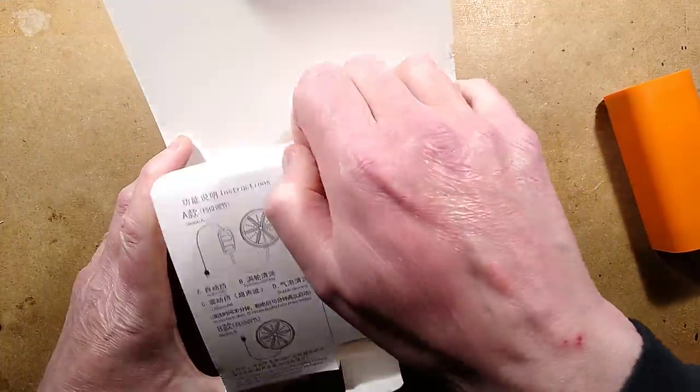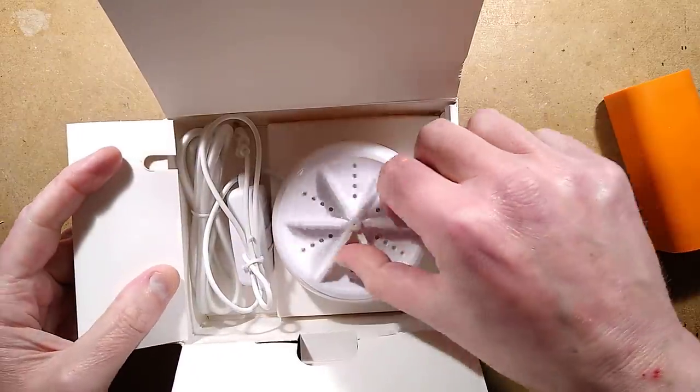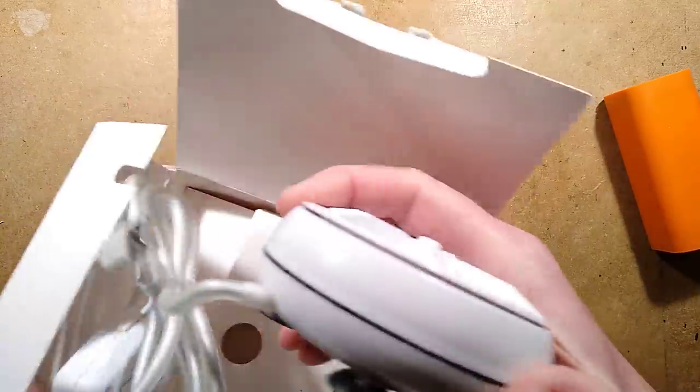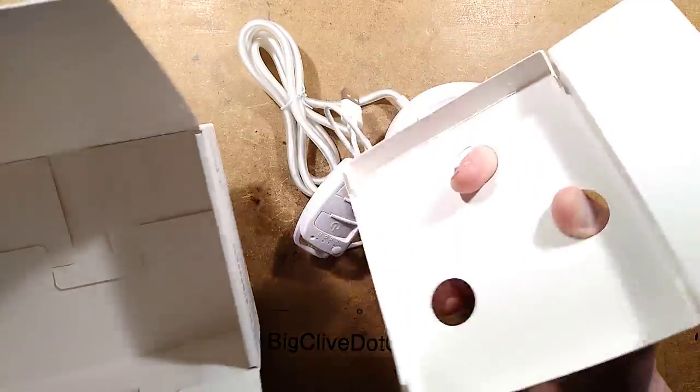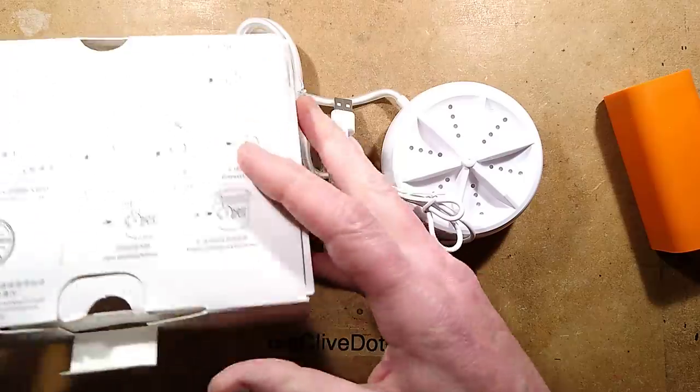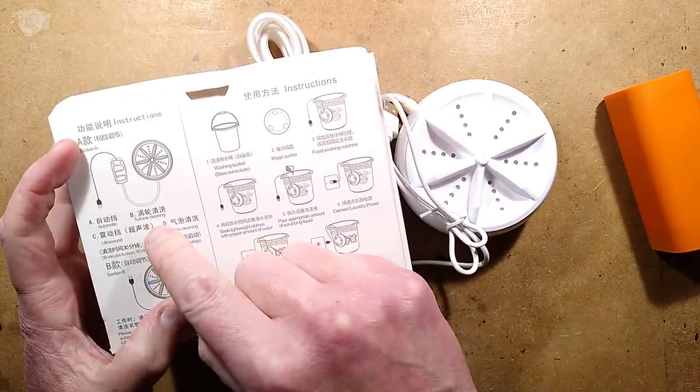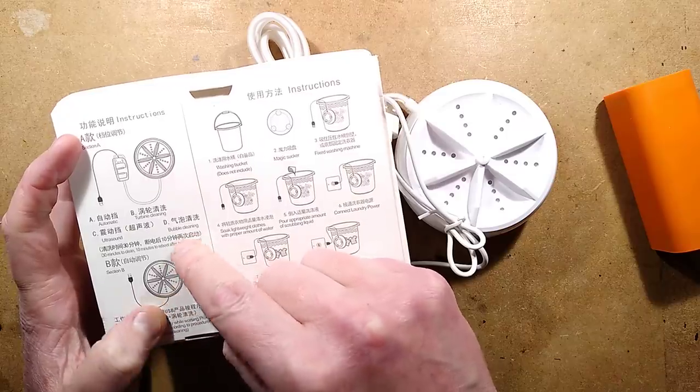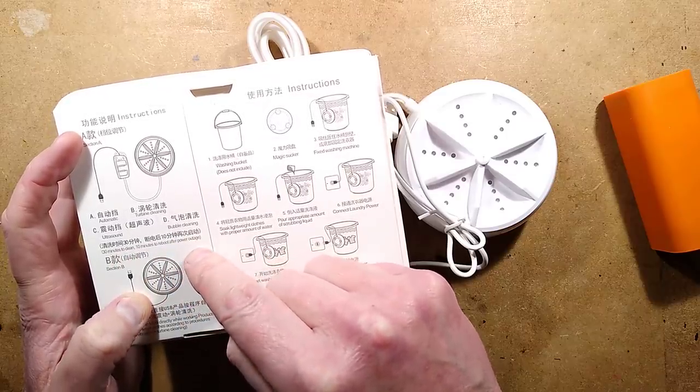So these do seem to be all over eBay. It seems to be a multi-function washing machine with rotating blades. Let's whip it out. There are no instructions. But it does say in the box, ABCD automatic turbine cleaning ultrasound and bubble cleaning. 30 minutes to clean, 10 minutes to reboot after power outage.